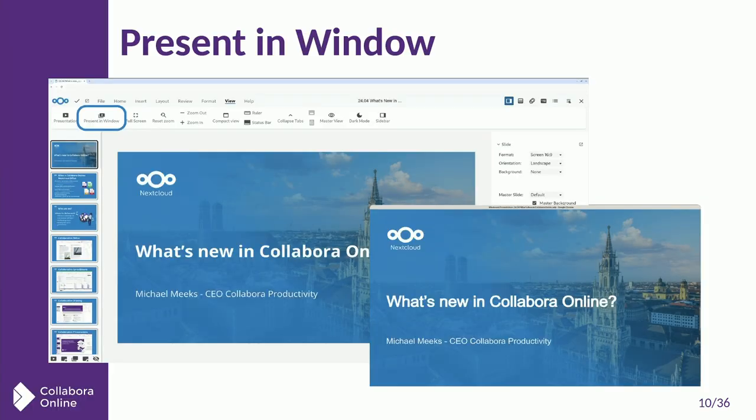You want to know what's new. Present in Window — this is a really cool feature. If you click Present in Window, instead of going full screen, it will open a new window for you. If you are in a video call using the Nextcloud video call function or whatever you use, it means it does not block off your screen. You can still see the participants, see when they're looking very bored, and know it's time to move to the next slide. It's also like the ultimate presenter notes — rather than just a little box of text, you can have a document open next to you with your notes, or even Wikipedia.